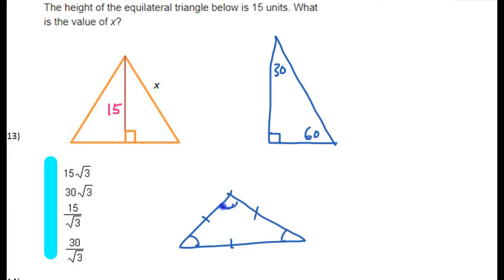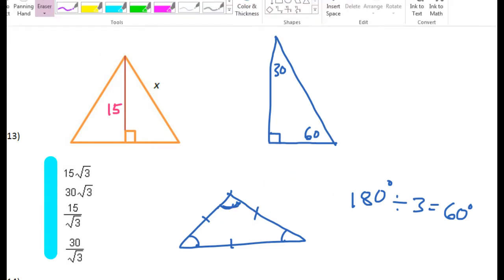Now, we know that all of the angles in a triangle have to add up to 180 degrees. So if we have three angles that are the same, we can find out what they are by dividing 180 by 3. And that turns out to be 60 degrees. So any time you have an equilateral triangle, you're looking at a triangle that has three 60 degree angles.